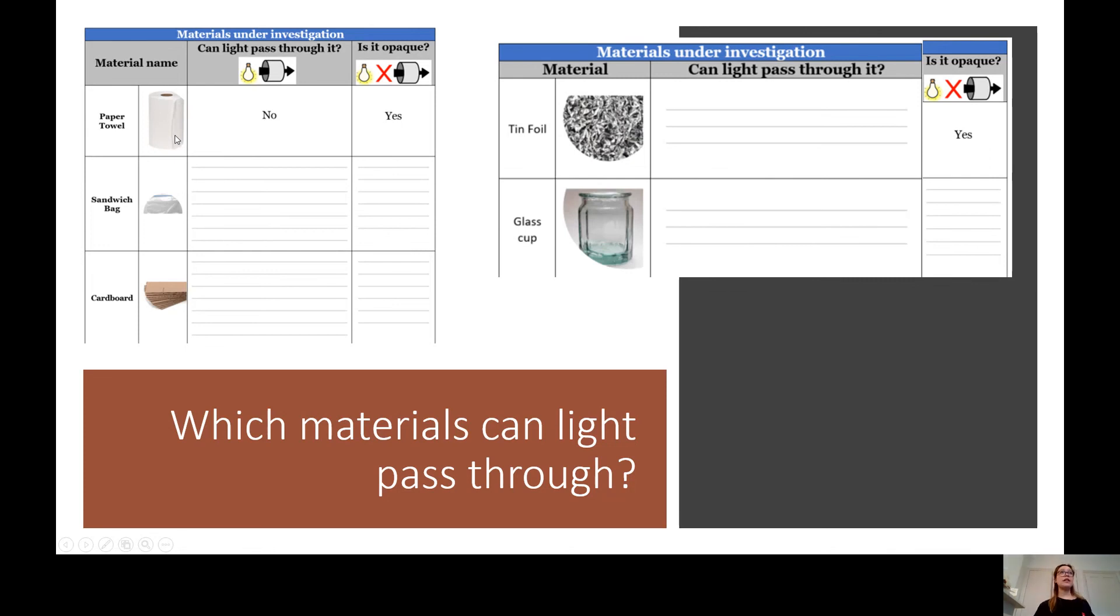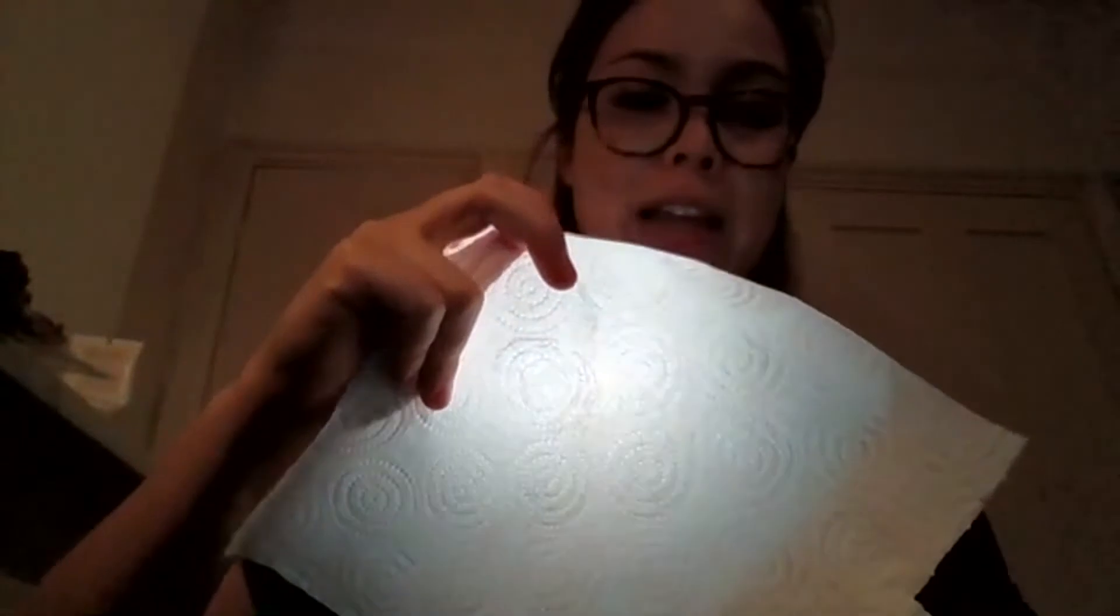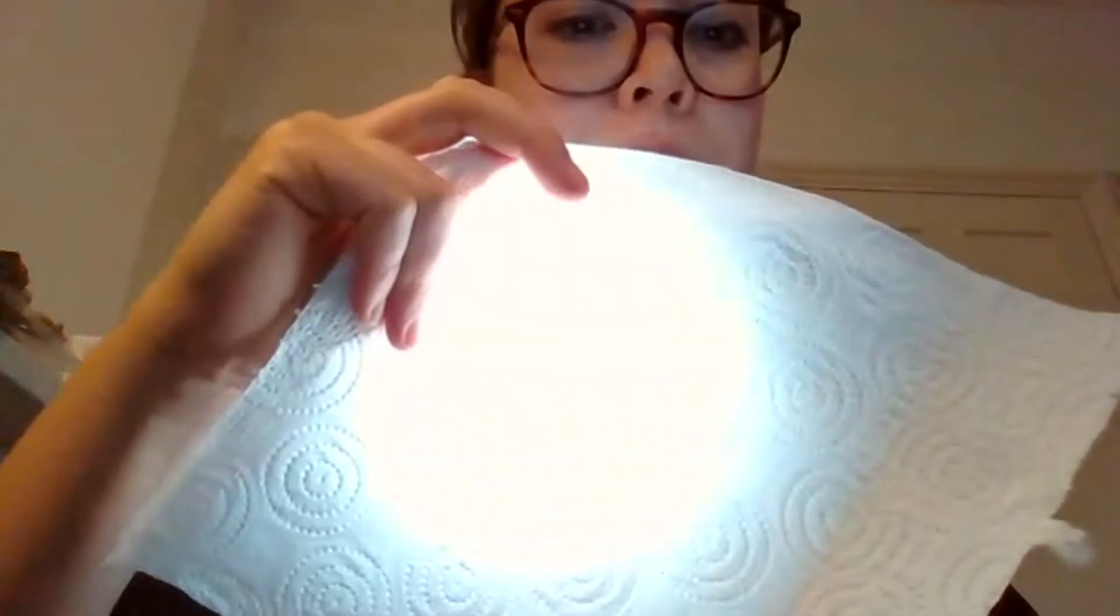So what you need to do is get a torch. And I am going to use my iPhone, which has a torch, but you might have an actual torch and then. Let me come off share screen. Right, what you need to do is we're going to start with the paper towel, which is here, and you're going to shine your light source, your torch through the material.